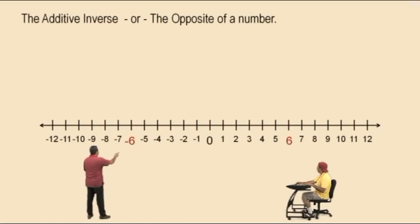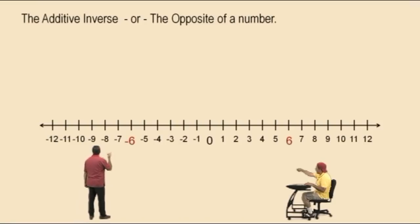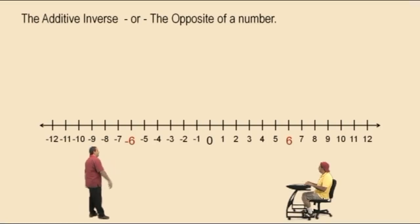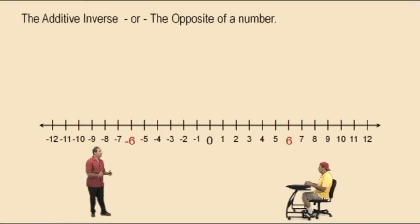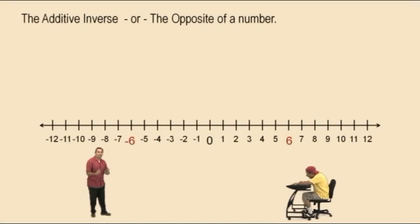Look at the two numbers here: 6 and negative 6. What's the opposite of 6? Negative 6! That's right. What's the opposite of negative 6? 6! That's right. To calculate the opposite of a number, you just multiply by negative 1. It's the same thing with the additive inverse — you multiply it by negative 1.